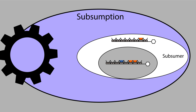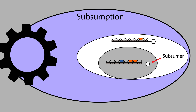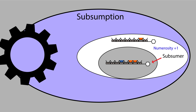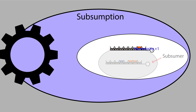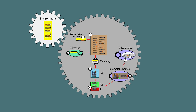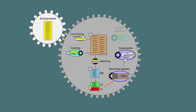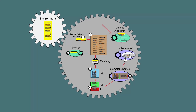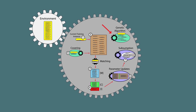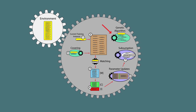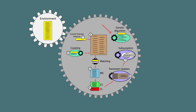The subsumer subsumes the more specific rule, meaning that the subsumer is effectively copied by increasing its numerosity, while the more specific rule is eliminated from the population. Subsumption can be applied to the rules of the correct set after updating parameters, as well as to the parent and offspring rules following the genetic algorithm step. Some studies suggest that only using GA subsumption is a more conservative option with less risk of degrading learning performance.